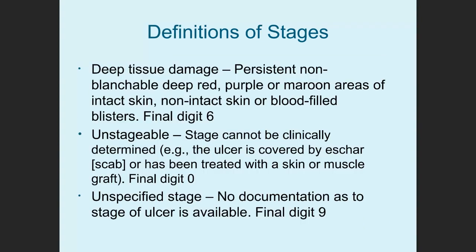Deep tissue damage — final digit six — is persistent, non-blanchable, deep red, purple, or maroon areas of intact skin, or blood-filled blisters. Unstageable means the stage cannot be clinically determined; the physician can't see what stage it is, because the ulcer is covered by eschar or scabbing, or it's already been treated with a skin graft, muscle graft, or transfer graft. Final digit zero is unstageable. Unspecified — final digit nine — means there's no documentation as to the stage of the ulcer.